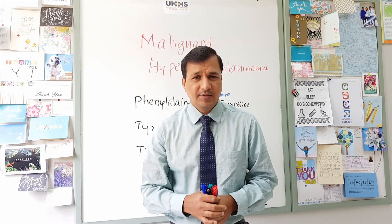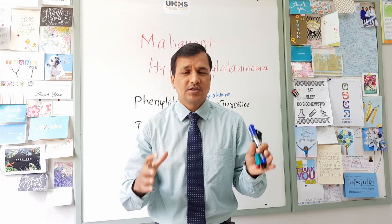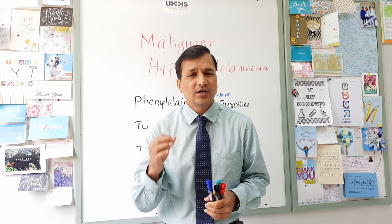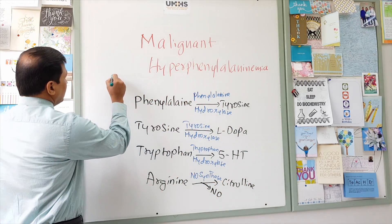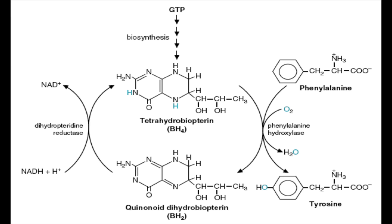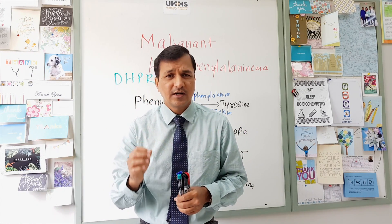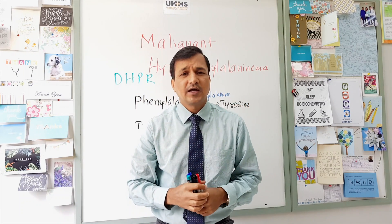Malignant hyperphenylalaninemia is caused by a deficiency or mutation in the gene coding for dihydropteridine reductase enzyme, DHPR. As covered earlier in this video, whenever phenylalanine is converted into tyrosine, tetrahydrobiopterin (BH4) is used and converted into dihydrobiopterin. Dihydrobiopterin is then recycled back to tetrahydrobiopterin by DHPR. If there is a mutation in the gene coding for DHPR, the activity of dihydropteridine reductase decreases.